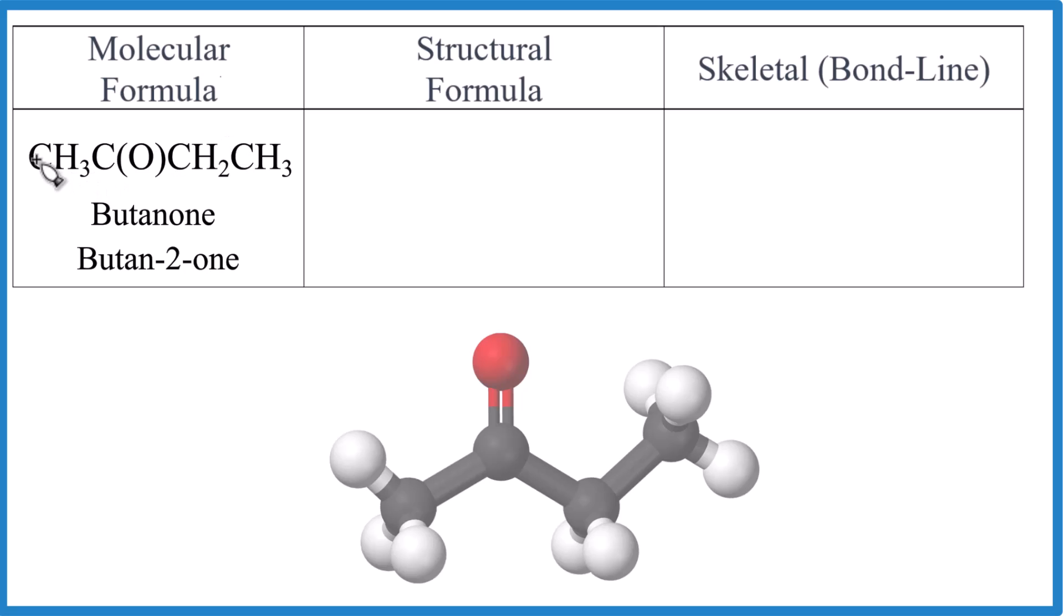So structural formula, we have one, two, three, four carbons in a row. And you can see that down here, one, two, three, four. On that second carbon, there's a double bonded oxygen. They show that right here. So let's write the structural formula for butanone. And then we'll write the skeletal or the bond line formula.